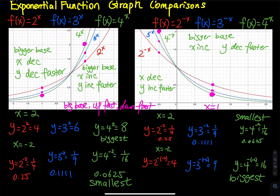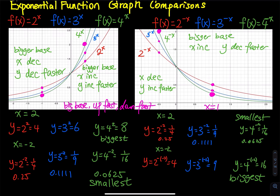The same concept carries over to e^x functions. When x equals 2, we already have a negative power in the exponent, so you bring everything to the denominator: 1/4, 1/9, and 1/16 — and 1/16 has the smallest y value. That's why when x is positive, the green curve is on the bottom. When x is negative, the two negatives become positive, giving us 4, 9, and 16 — so 16 is the biggest, meaning the green curve has the biggest y value for negative x.